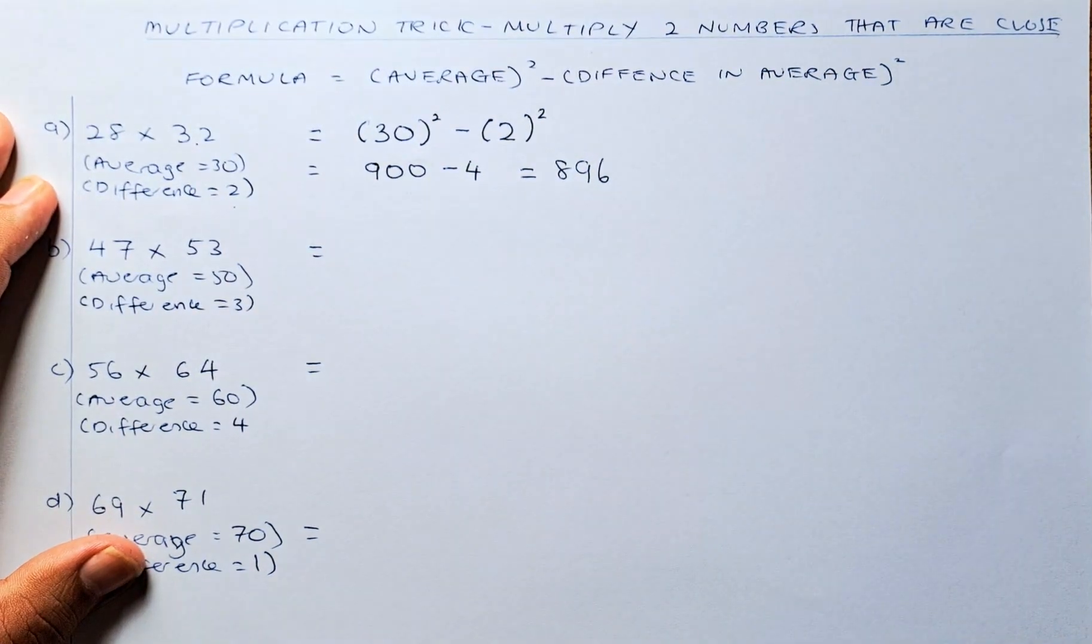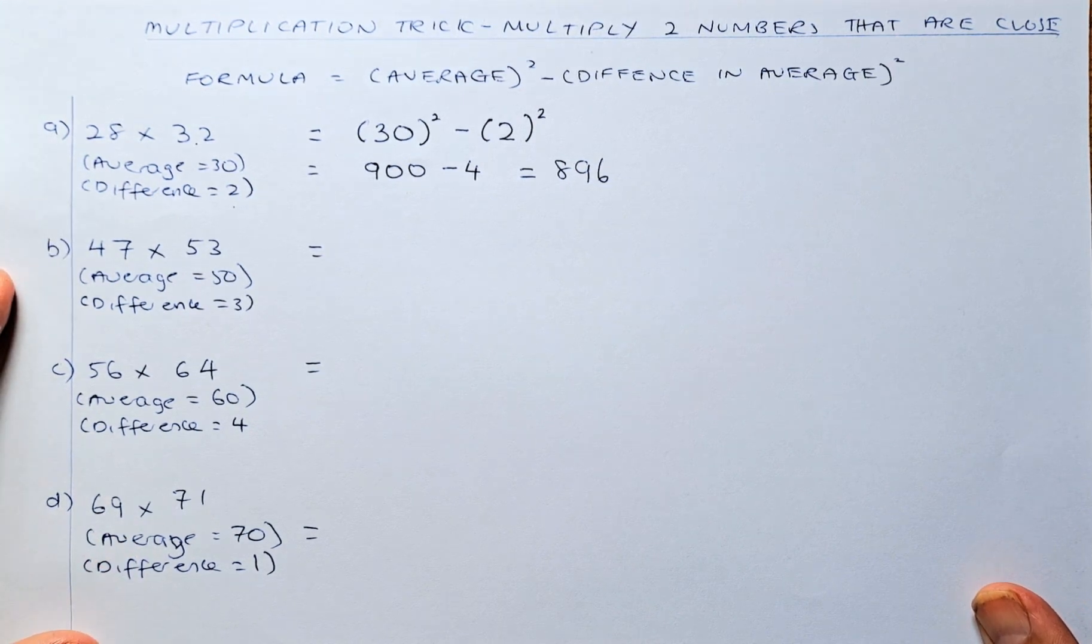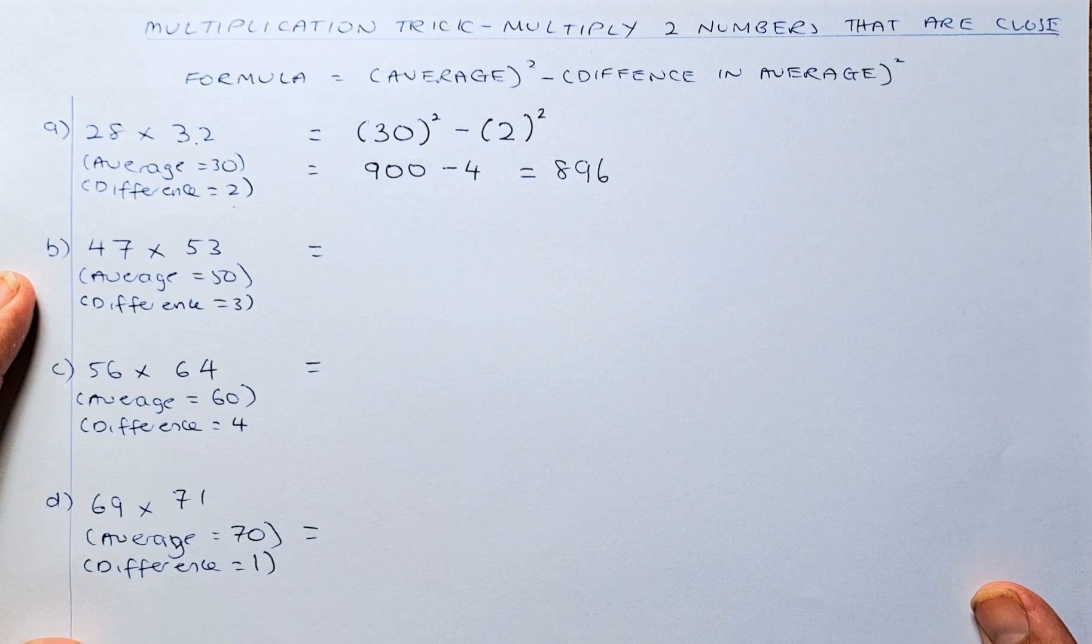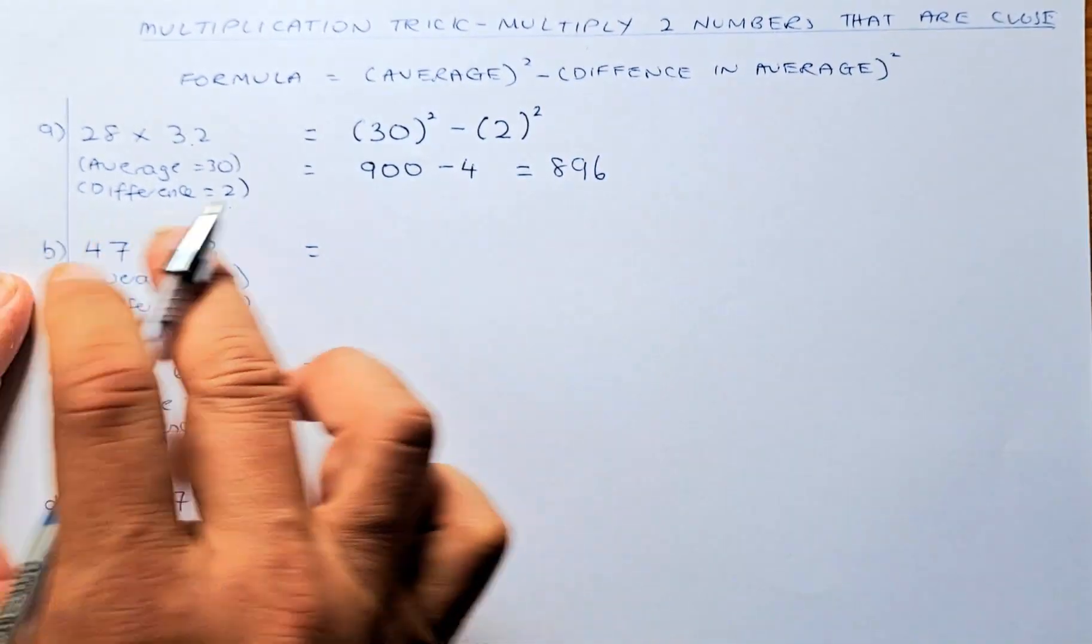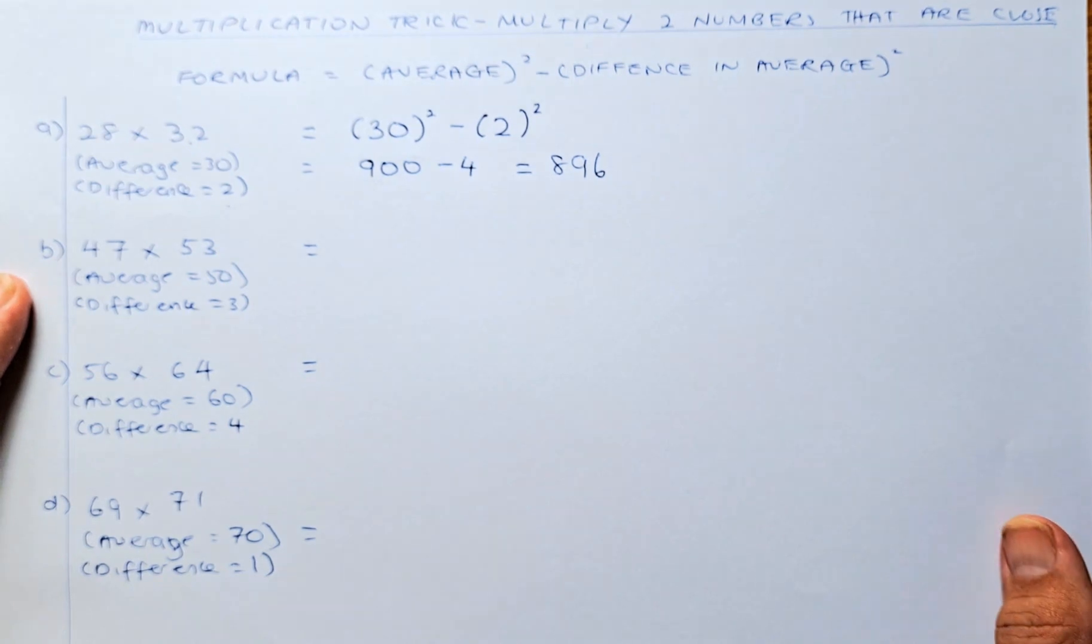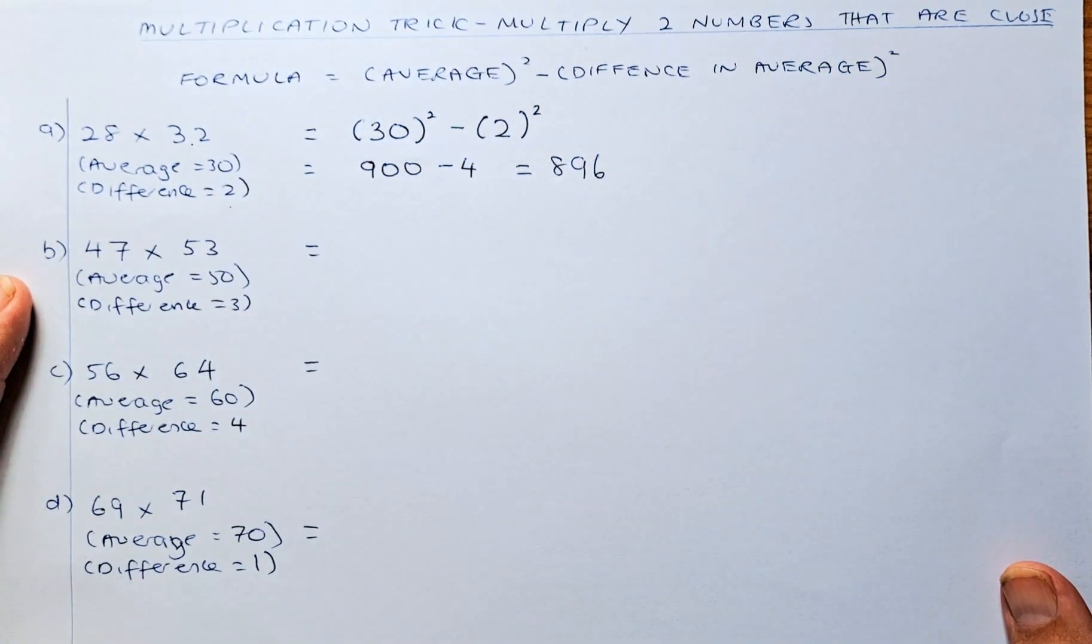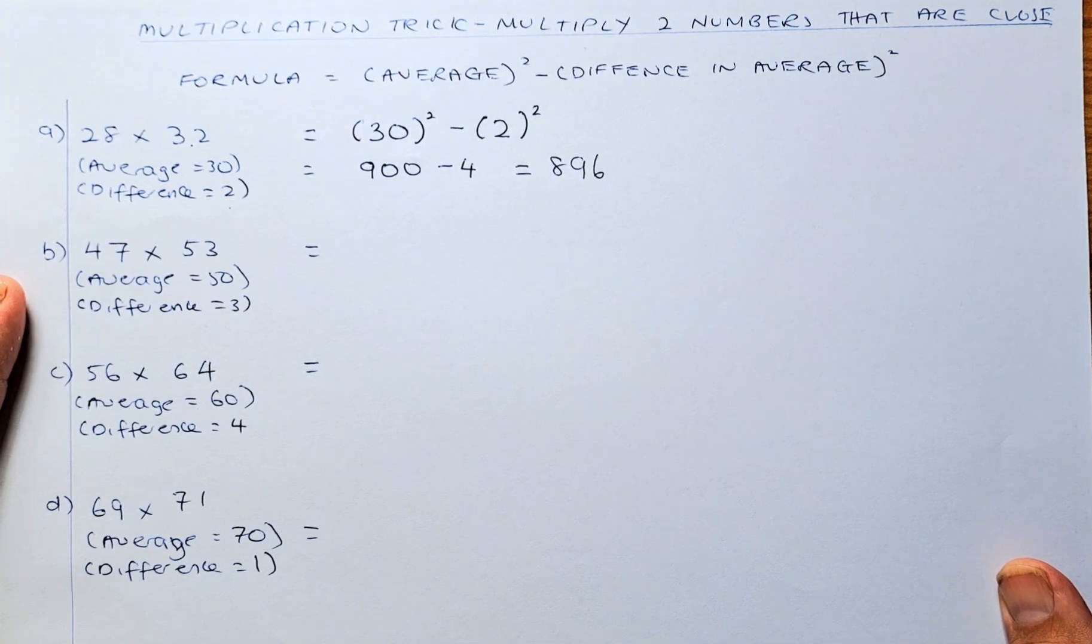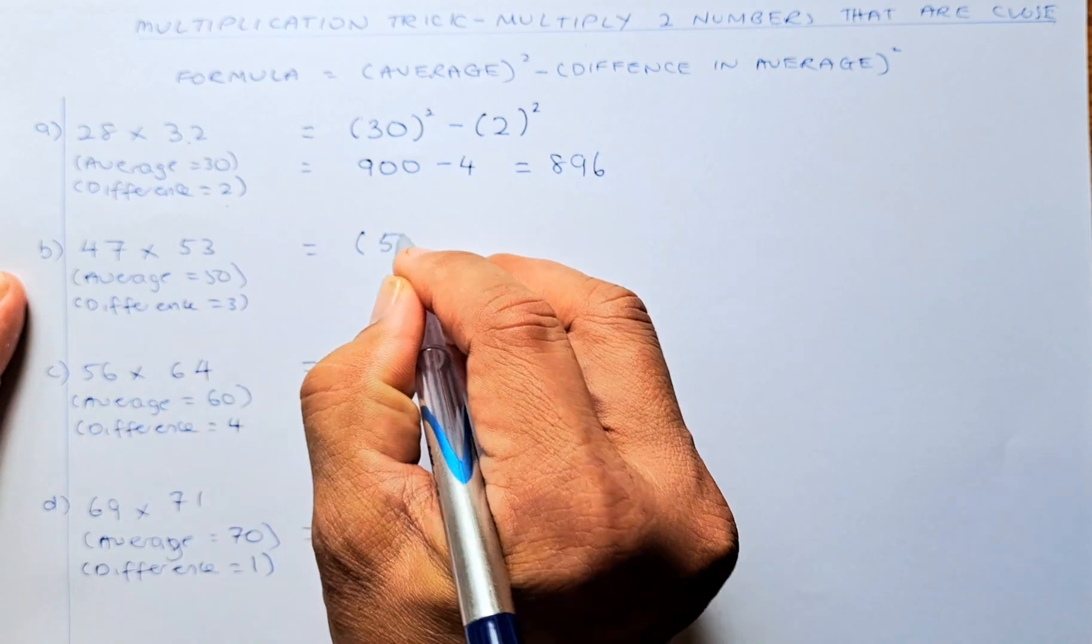Great. Now we shall do the second example. Once you get the hang of it, it's easy. So now 47 times 53. The average is 50, and the difference is 3 because 53 is 3 more than 50 and 47 is 3 less than 50. So the formula is average squared: 50 squared